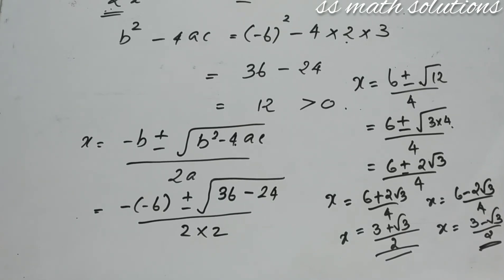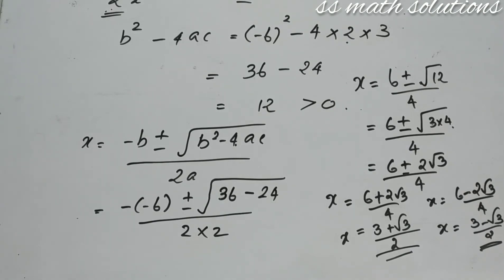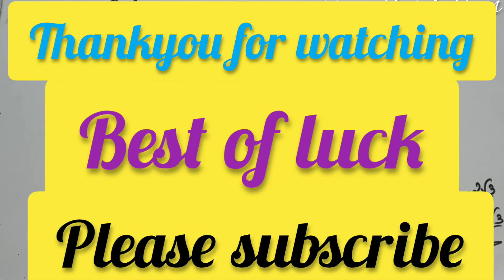To summarize the nature of roots: B squared minus 4AC less than zero means no real roots — the equation contains complex numbers. B squared minus 4AC equal to zero means two equal real roots. B squared minus 4AC greater than zero means two distinct real roots. Hope you understood today's video. Thank you for watching. Please subscribe to my channel for future videos.